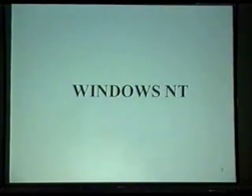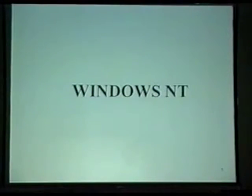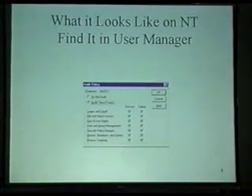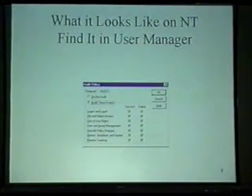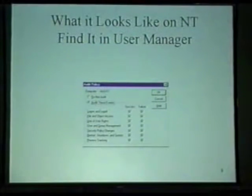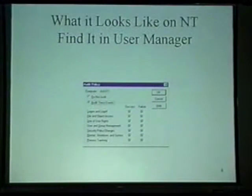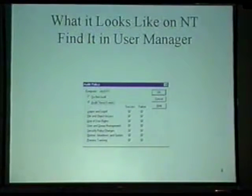Now we're going to focus in on Windows NT, discuss the native tools and some details. This is what it looks like, and this is an auditor's dream - everything turned on to audit. This is something you want to adjust for your environment, obviously. There's nothing to audit if there's no audit trail.